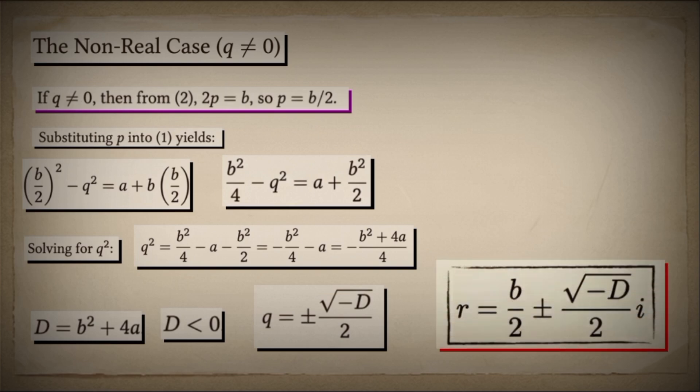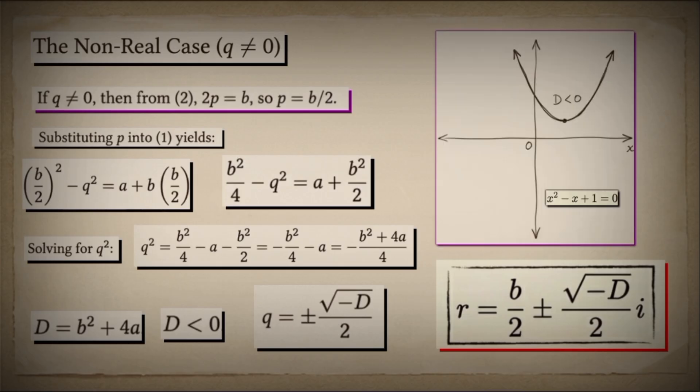And so the identity of R is finally revealed: R equals B over 2, plus or minus the square root of negative D over 2, times i. Look at this parabola — this is the graph of X squared minus X plus 1. Notice that it never touches the X axis; there are no real solutions to this equation. This is why our journey into the complex plane was not a luxury — it was a necessity. Some quadratic equations simply cannot be solved without leaving the real number line behind.